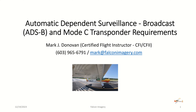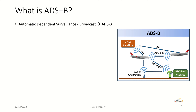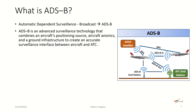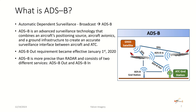Automatic Dependent Surveillance Broadcast, or ADS-B, and Mode C transponder requirements. ADS-B is known as the Automatic Dependent Surveillance Broadcast. It's an advanced surveillance technology that combines an aircraft's positioning source, aircraft avionics, and a ground infrastructure to create an accurate surveillance interface between aircraft and air traffic control. That became effective in January of 2020. It is a more precise form of providing information about an aircraft's speed and position than traditional radar-based, transponder-based technology.